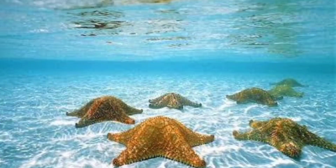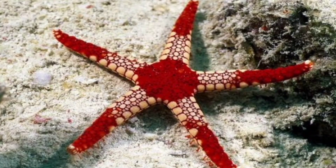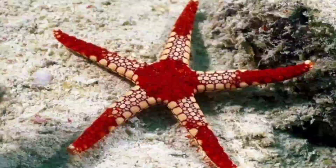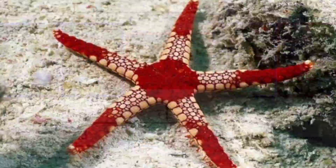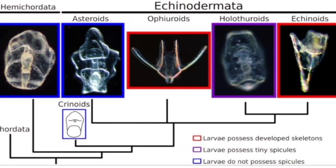The skeleton is made up of calcium carbonate. They have an open circulatory system. They respire through gills or cloacal respiratory tree. They have a simple radial nervous system and the excretory system is absent. The body is unsegmented and tube feet aid in locomotion.